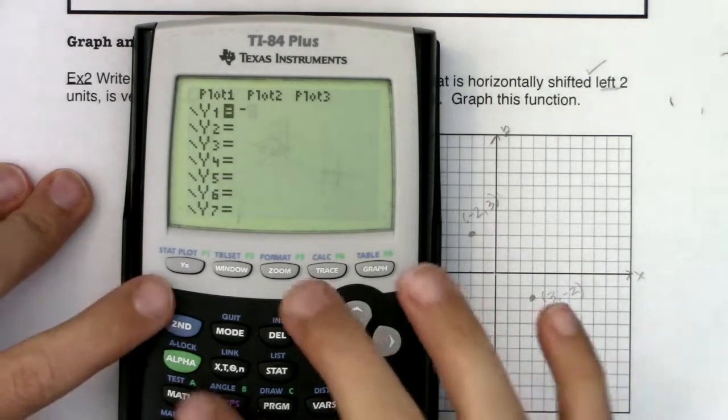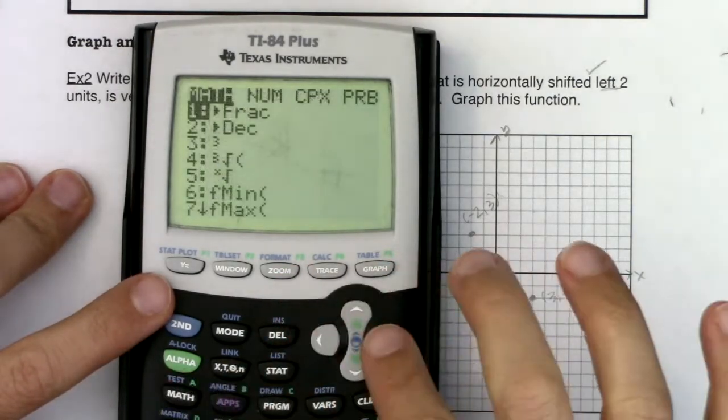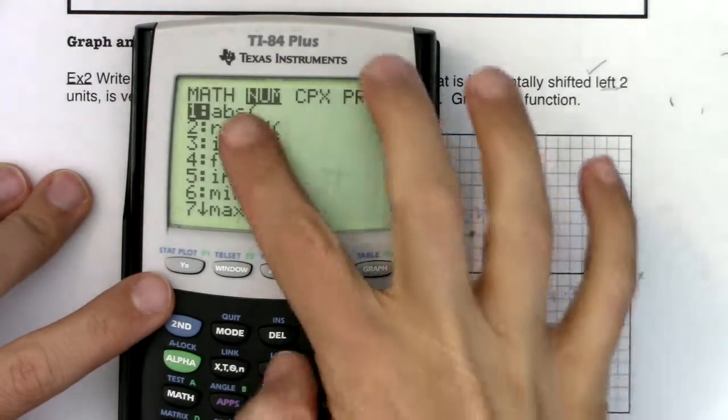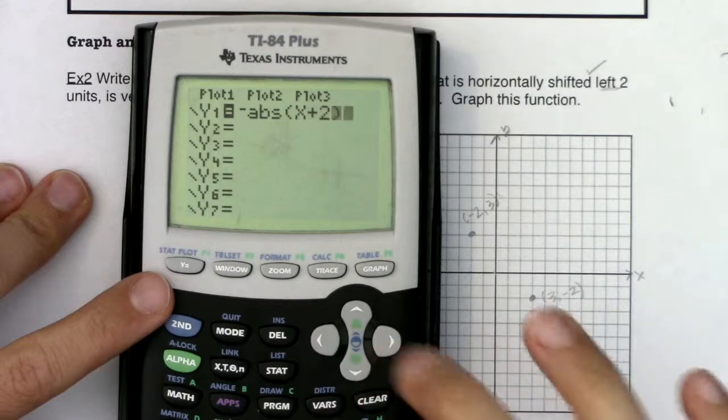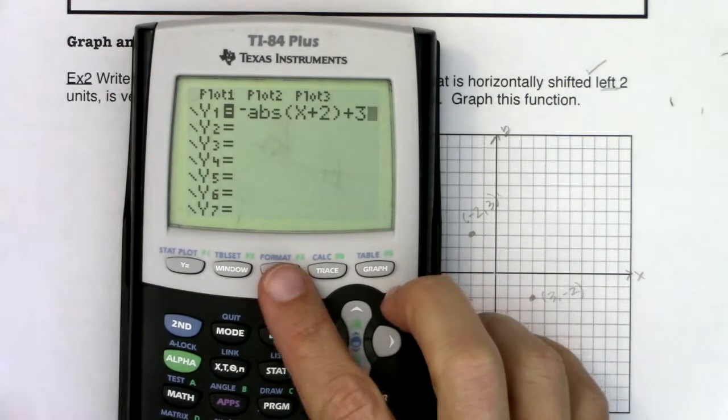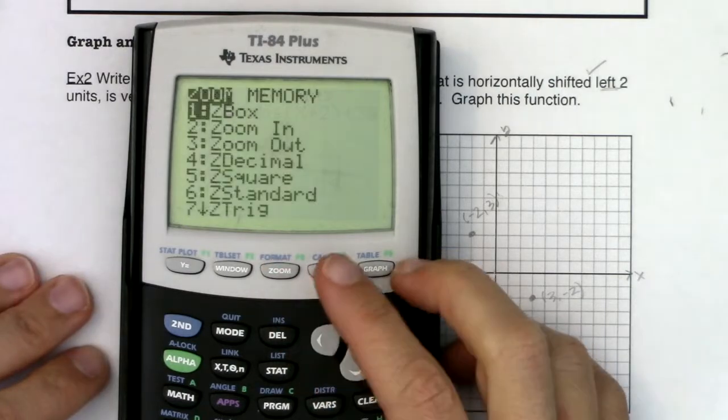So we have negative, and for absolute value, again, math, go to num. We've got option one for absolute value. I have x plus two in there. And then I need to add three. I'm going to hit zoom six because I'm on a new problem. I want to reset my window.